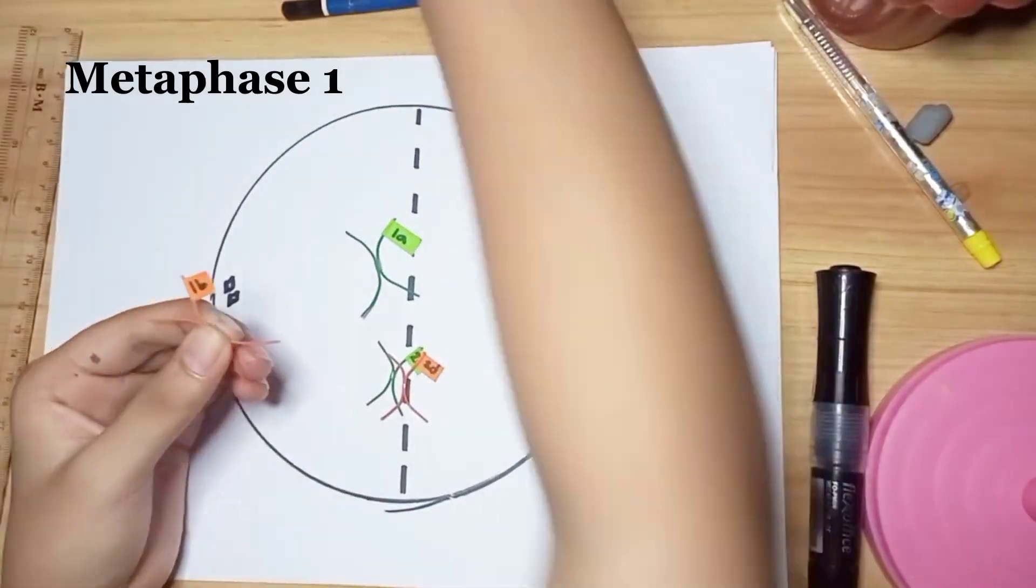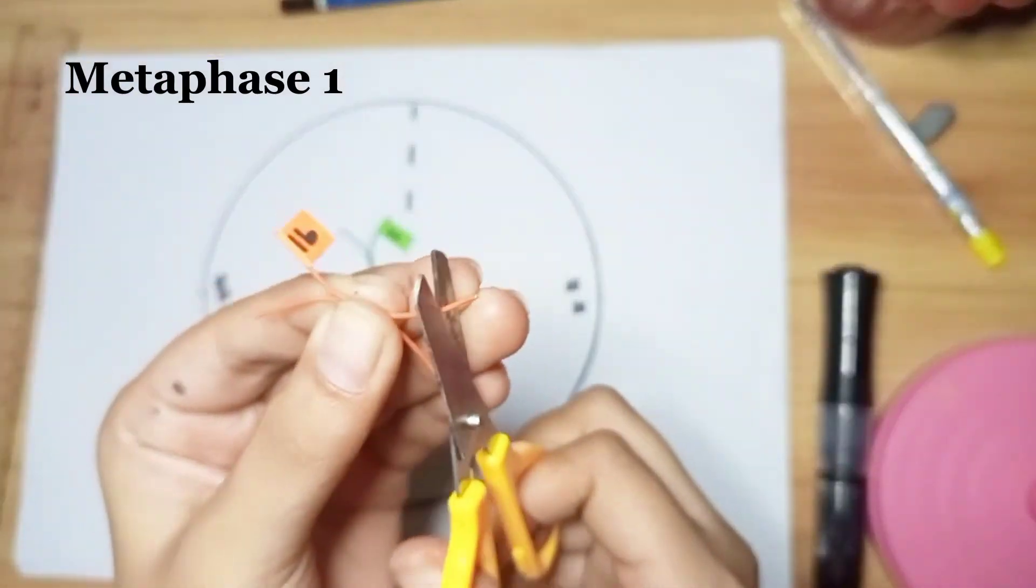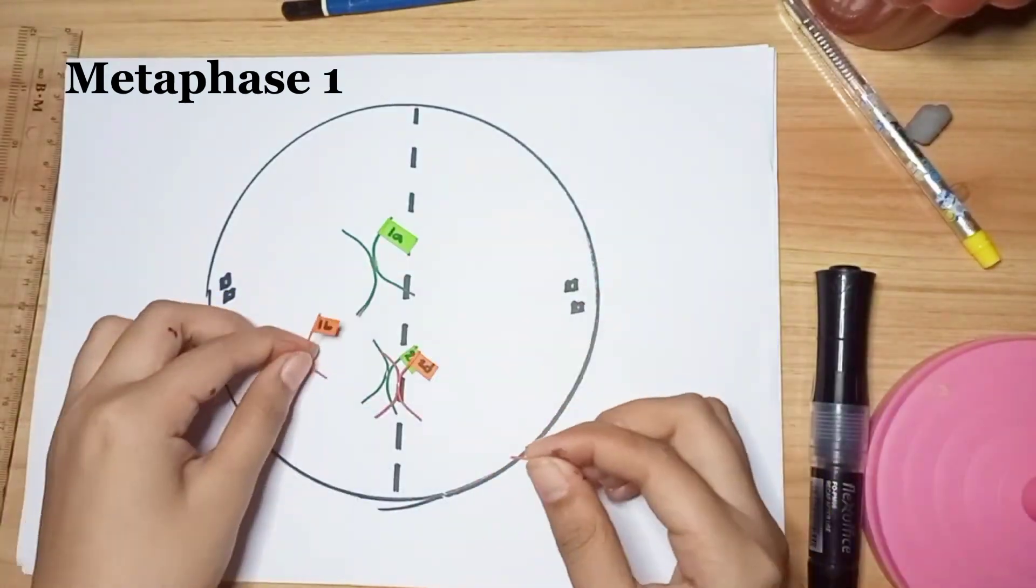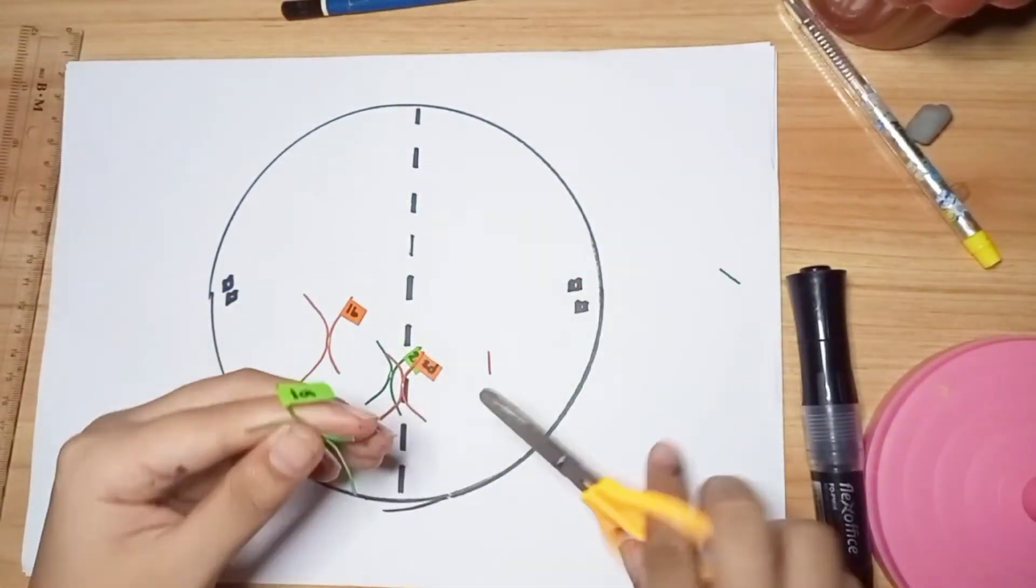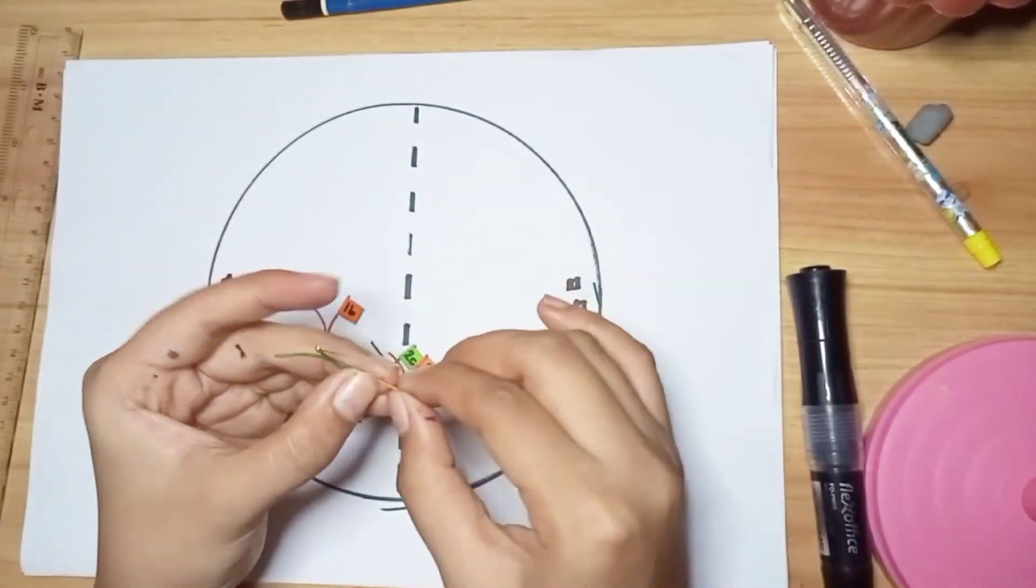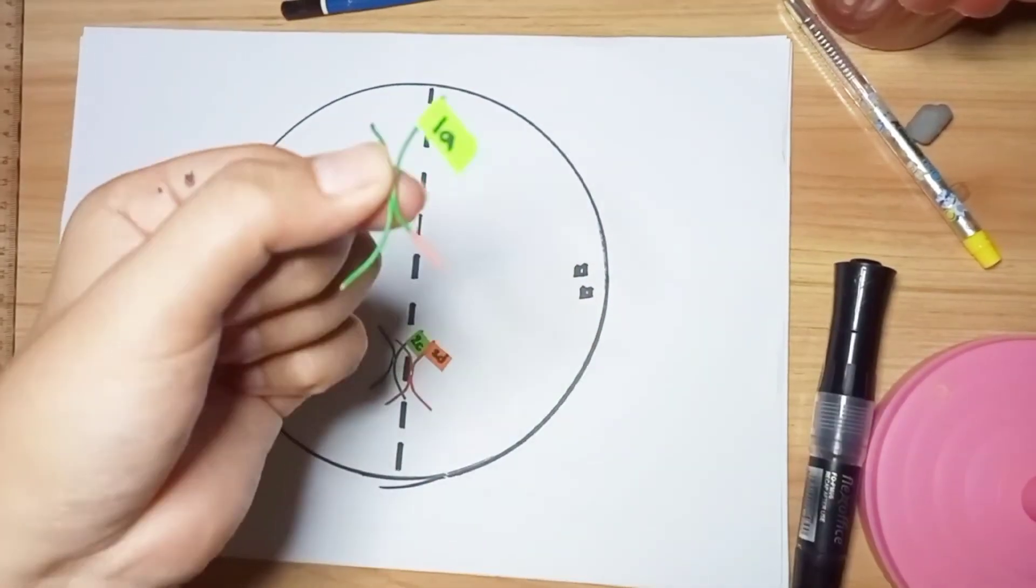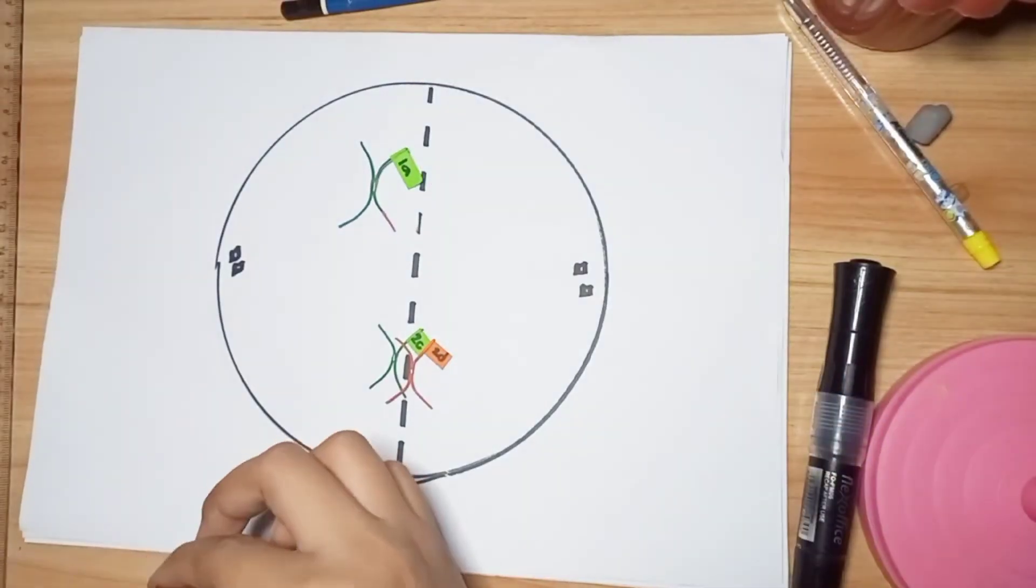Within the tetrad, any pair of chromatid arms can overlap and fuse in a process called crossing over or recombination. Recombination is a process that breaks, recombines, and rejoins sections of DNA to produce new combinations of genes.